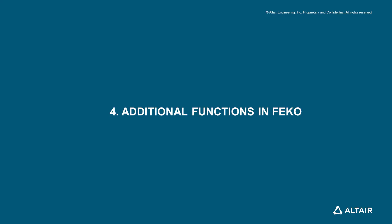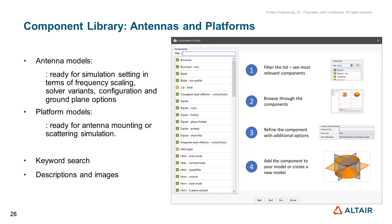Let's talk about some of the additional functions that FEKO offers. The FEKO component library contains a set of antenna models and generic platform models. The antennas are ready for simulation with settings for frequency scaling, solver variance, configuration, and ground plane options. The library also contains generic platform models such as airplane, drone, helicopter, ship, and so on, which are ready for antenna mounting or scattering simulations. The library can be easily searched by keywords and a summary is included for each component.